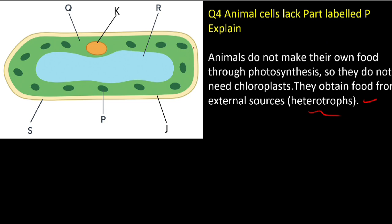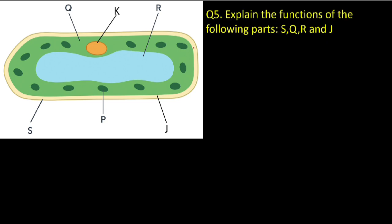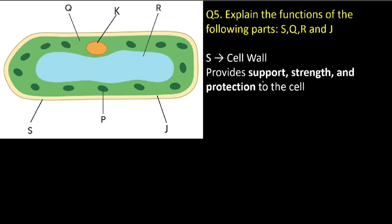Question number five: explain the functions of the following parts — S, Q, R, and J. S is the cell wall. The function of the cell wall is to provide support, strength, and protection to the cell — it is the outer wall, so it protects the cell.